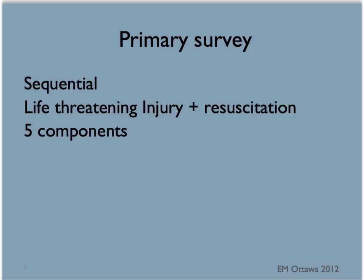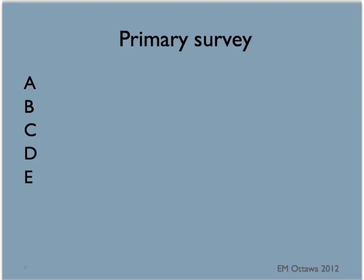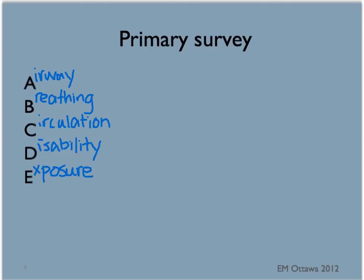There are five components of the primary survey: airway, breathing, circulation, disability, and exposure. We will first discuss airway.